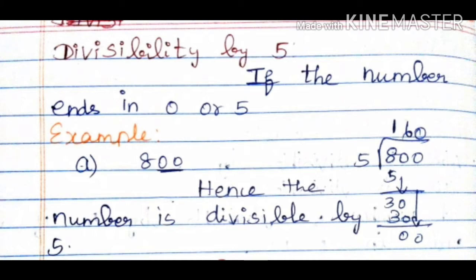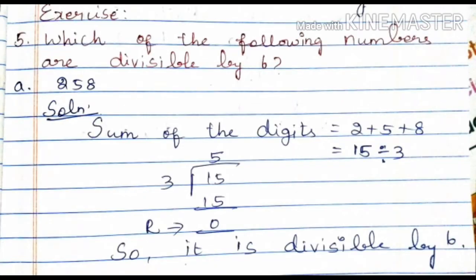Now let's look at the exercise sums. We have page number 105, question 4 roman. Which of the following numbers are divisible by 5? The first number is 815. Write the solution: the last digit ends in 5, so it is divisible by 5.